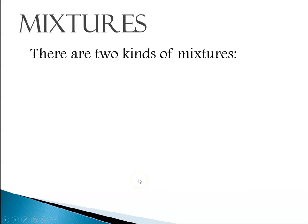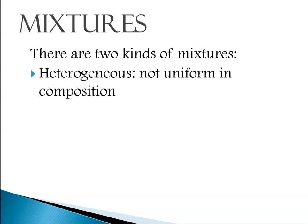When we talk about mixtures there are two kinds. There are heterogeneous mixtures that are not uniform in composition. An example of a heterogeneous mixture is a salad. When I have a salad I have my lettuce — usually two or three different kinds — I might have some tomatoes, some croutons, and I'm going to put some salad dressing on it. So it's a mixture and I can see that it's not uniform and I can also see all of the different pieces.